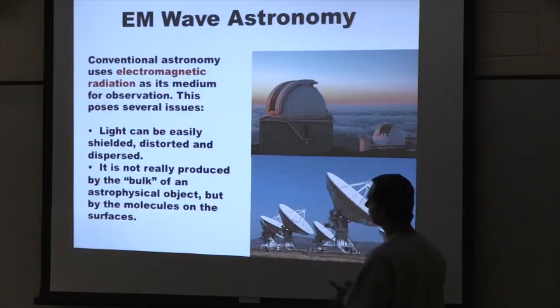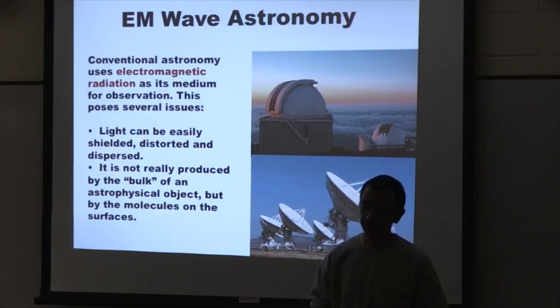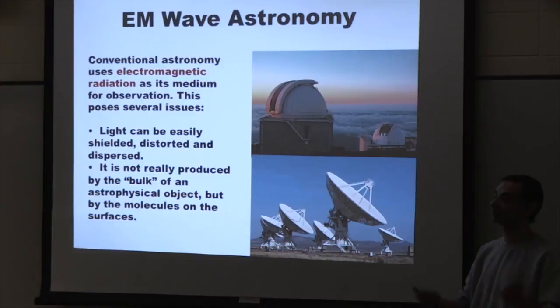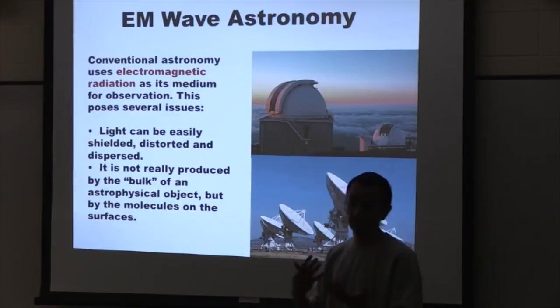There are two main reasons why light is problematic. The first reason is that electromagnetic waves interact strongly with matter, meaning it's very easy for light to get absorbed by something else or get corrupted. For example, if you've got some dust, dirt, or gases, and light passes through it, it's going to either get absorbed or the information it carries becomes corrupted.